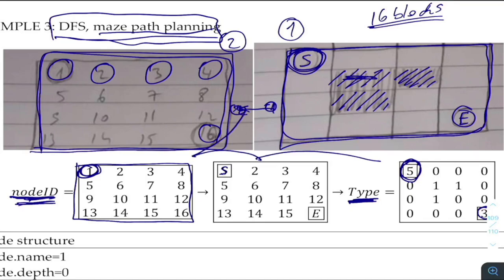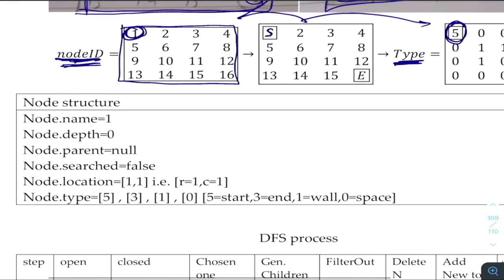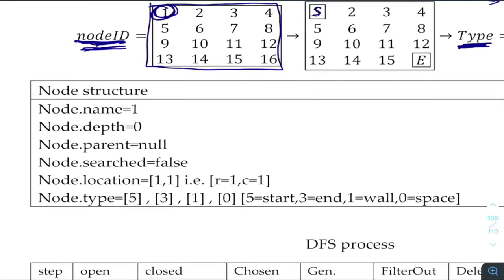For every node you go through stages: ID, parent, searched, and location. It makes sense to name nodes as numbers since there are only 26 letters in the alphabet — if you need to name hundreds of nodes, numbers are much more practical. That's why we use numbers starting from zero.